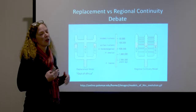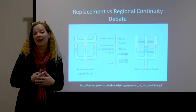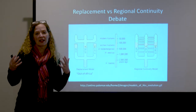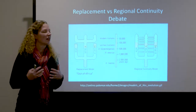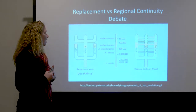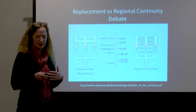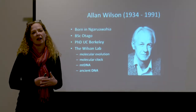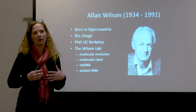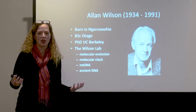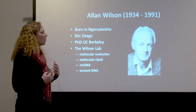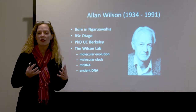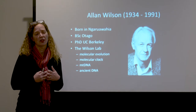The replacement model proposed that African Homo sapiens replaced these earlier Homo erectus populations in Europe and in Asia. The thing that really changed our perspective was when genetics entered the picture of human evolution.